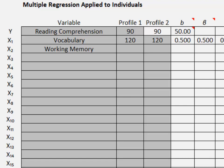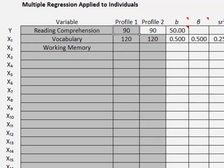This spreadsheet can be used to apply simple regression or multiple regression to individuals. In the example, we wanted to know how unusual is it for someone with a vocabulary score of 120 to score 90 or less on reading comprehension.